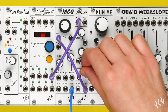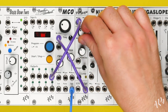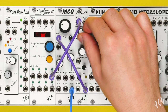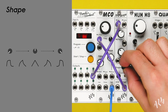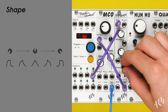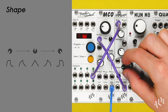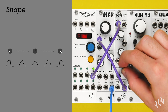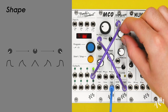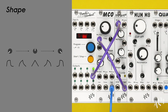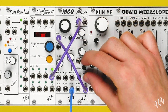As we turn shape to the right, the decay stage becomes logarithmic. Notice that the attack stage does the opposite, going from logarithmic to linear to exponential from left to right. These three controls allow for many different shapes to easily be created.